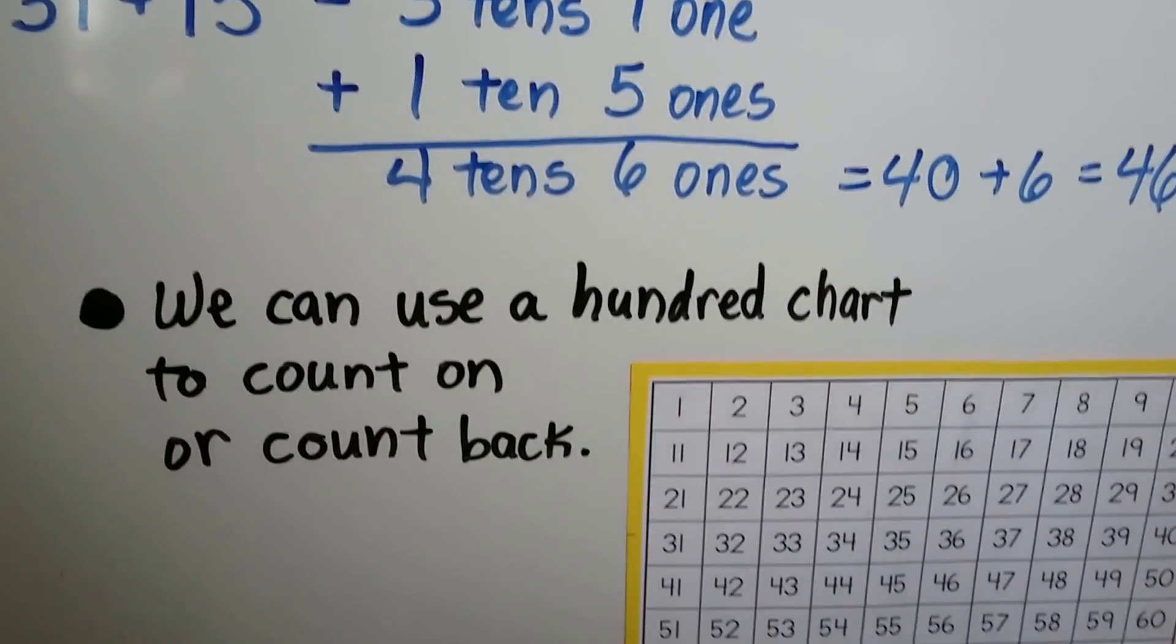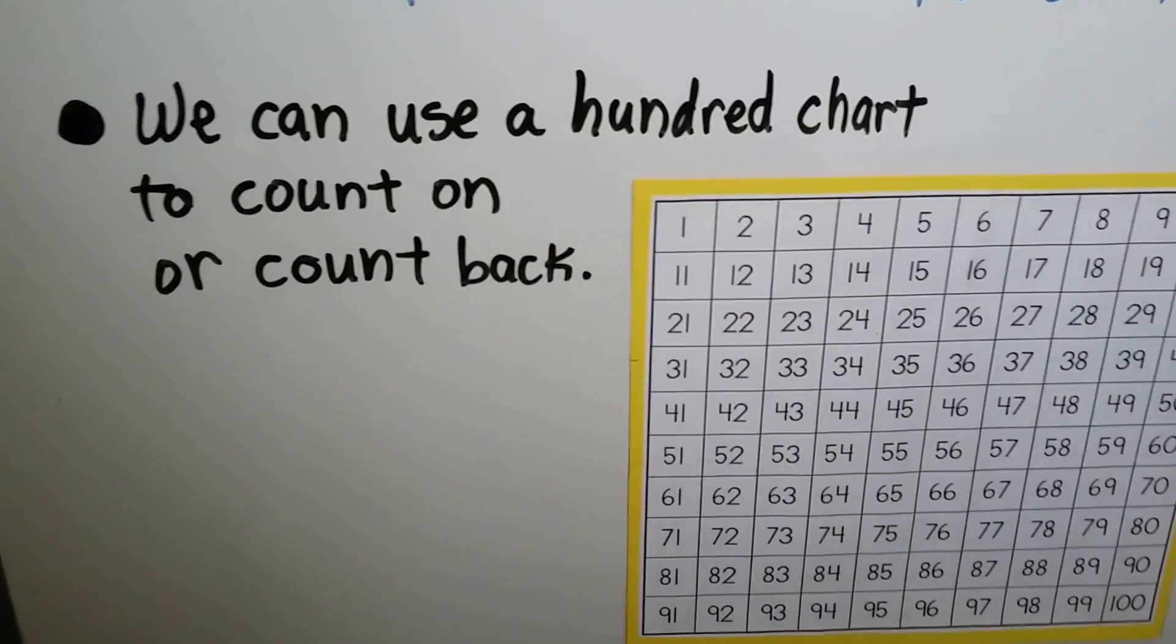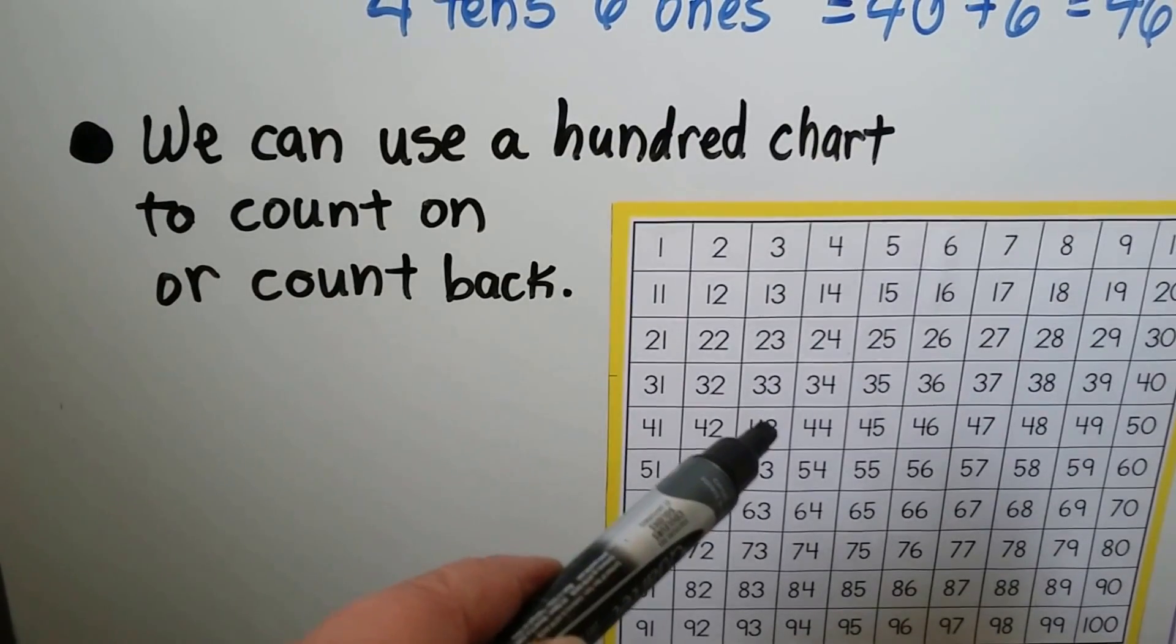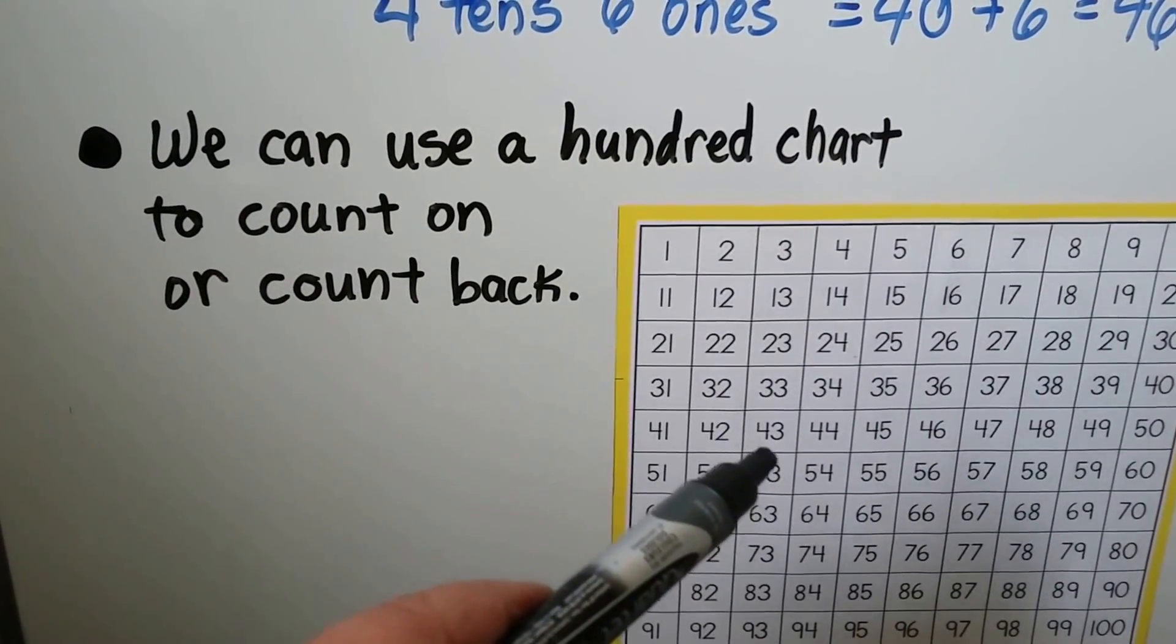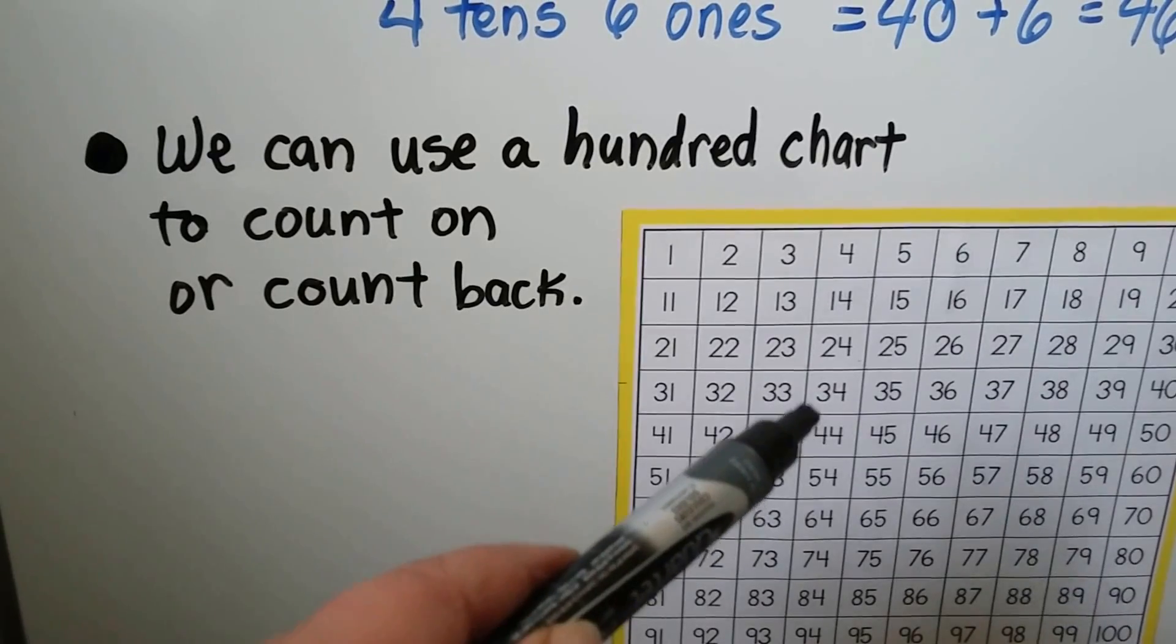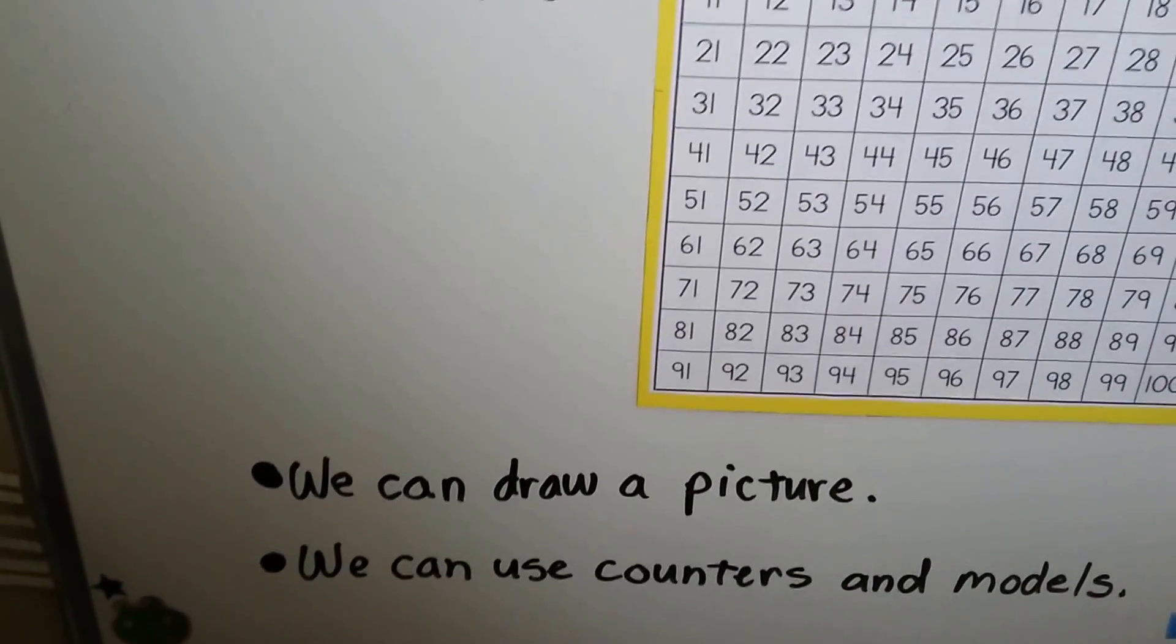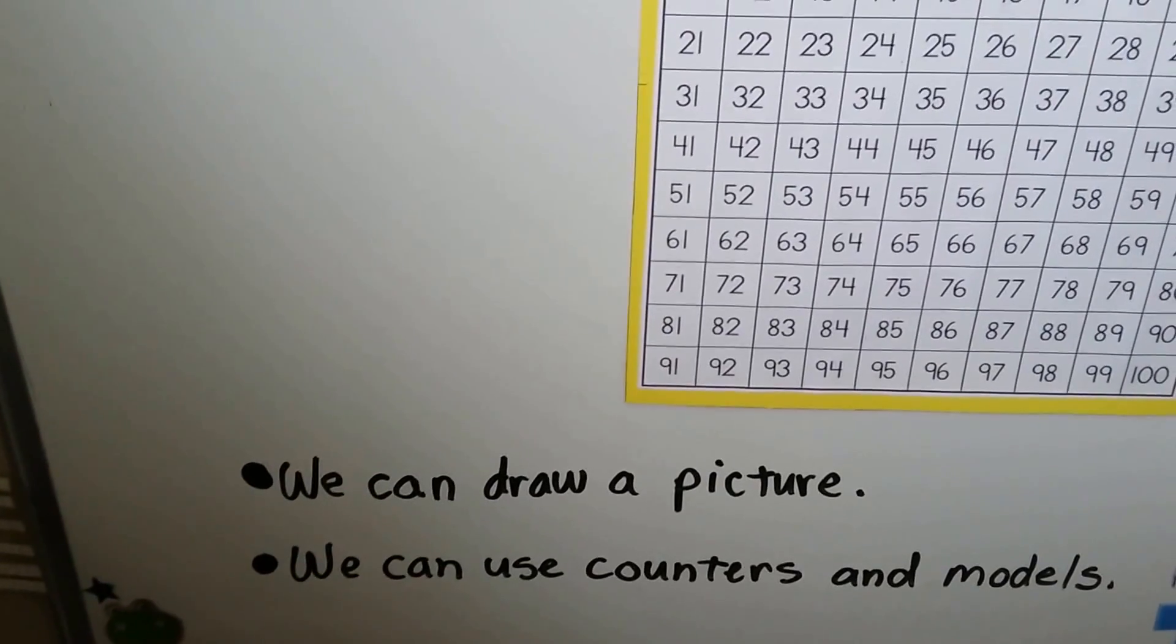We can use a hundred chart to count on or count back. We just learned that in the last video. If we need to add a 10, we just go down to the next row. If we need to take away a 10, we go up a row. We can draw a picture, and we can use counters and models also.